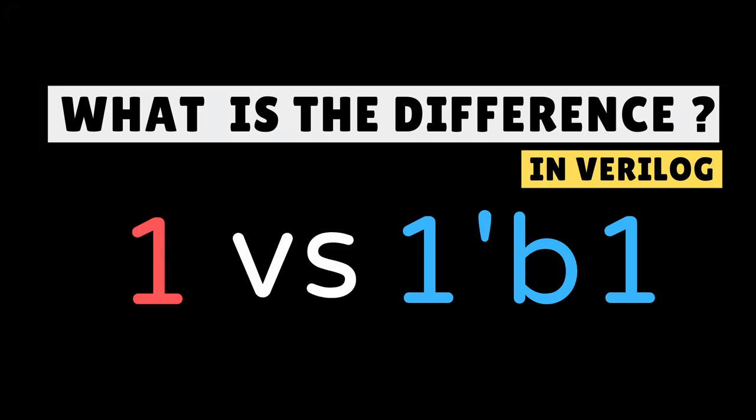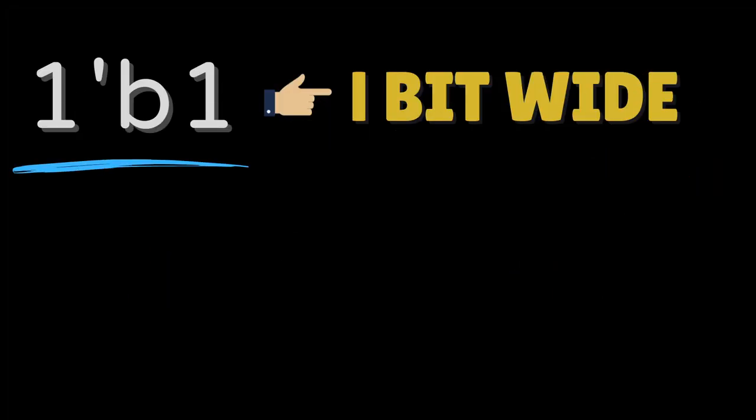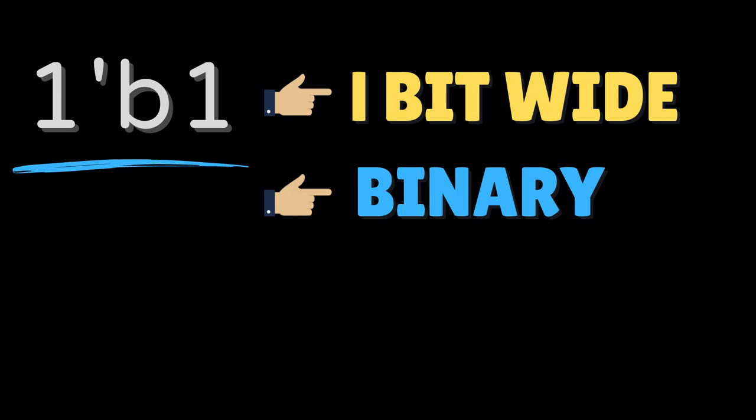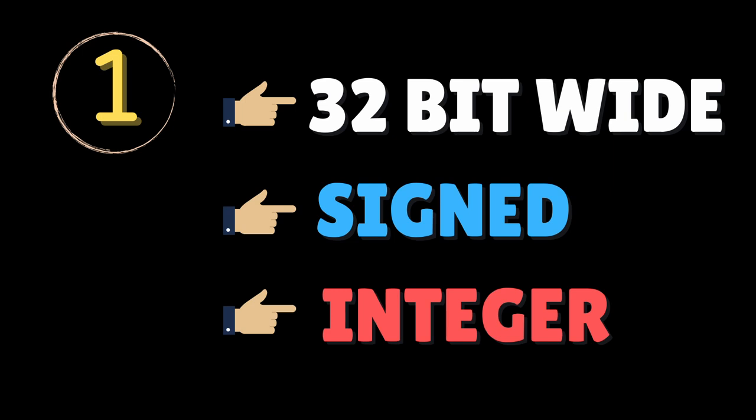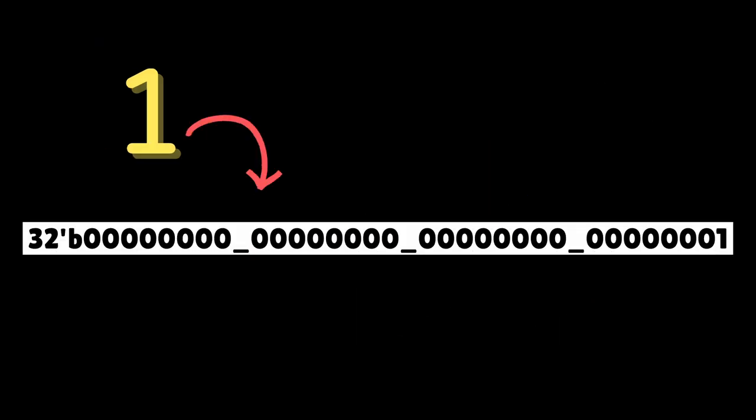What's the difference between 1 and 1'b1? 1'b1 is 1 bit wide integral value which is binary and unsigned. This one is 32 bit wide which is signed and same type as integer. It's equivalent to 32'b, 0 0 0 0 0 0 and 1.